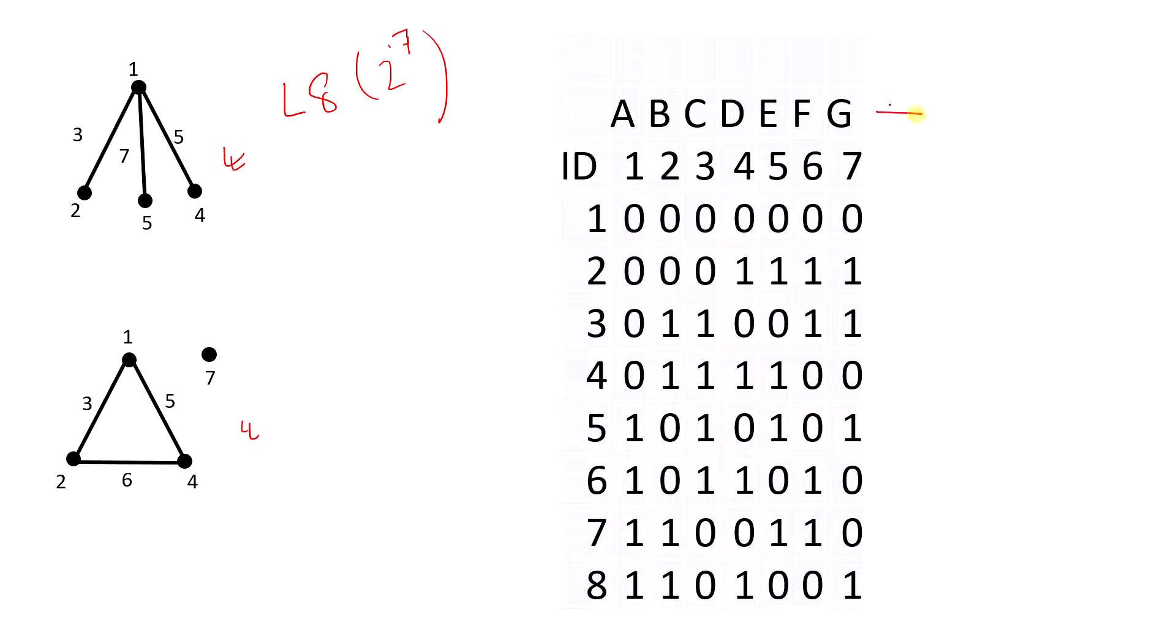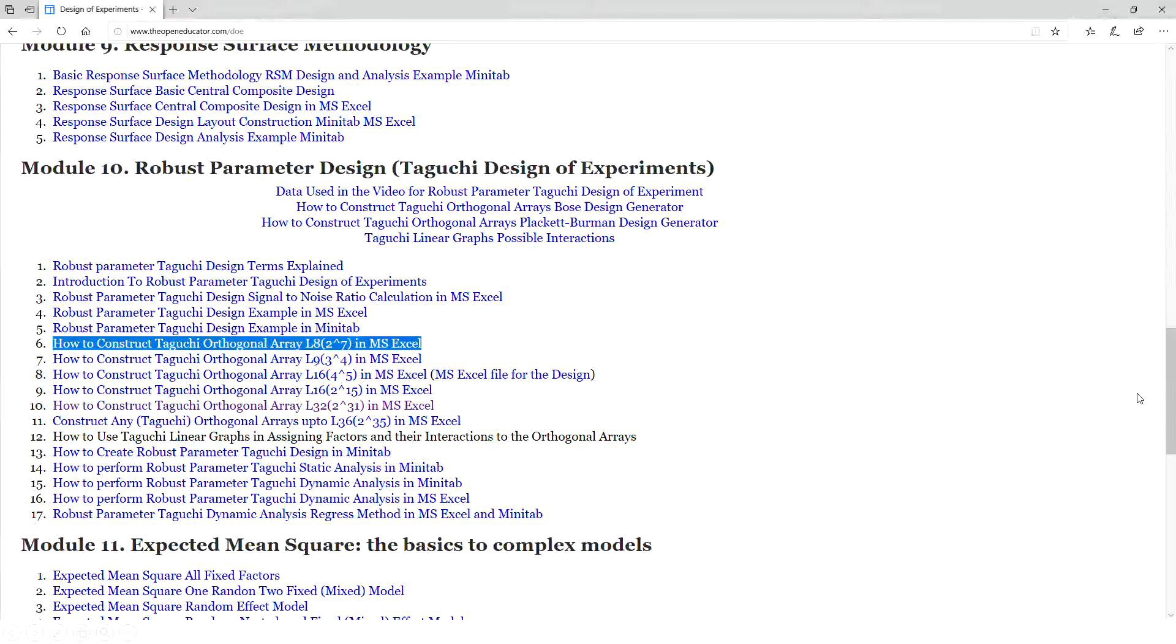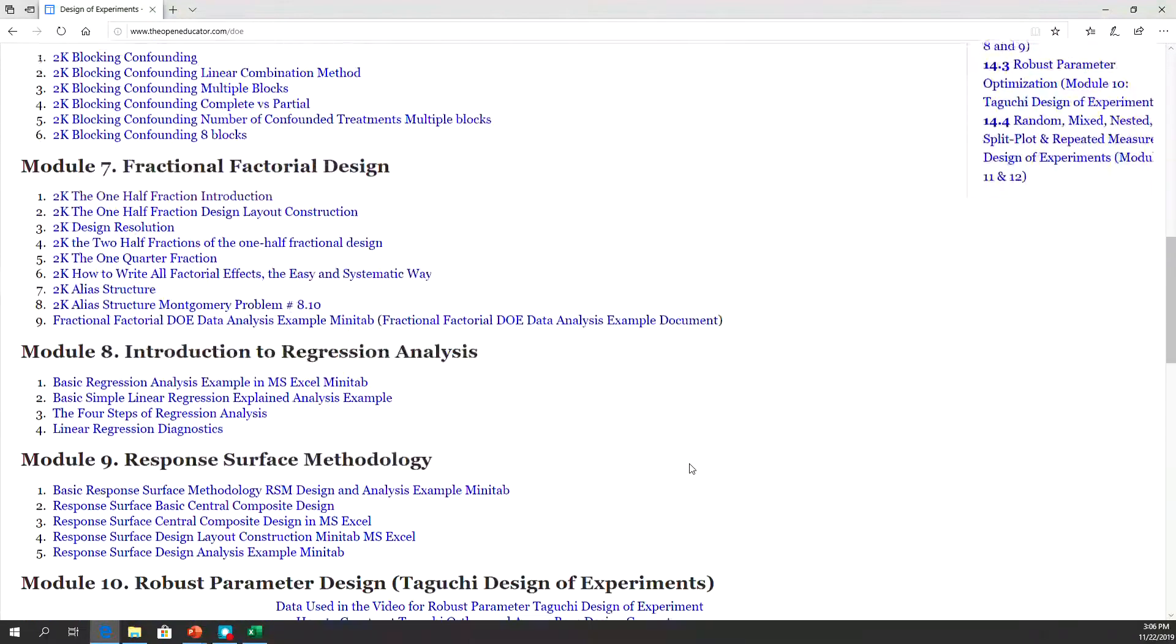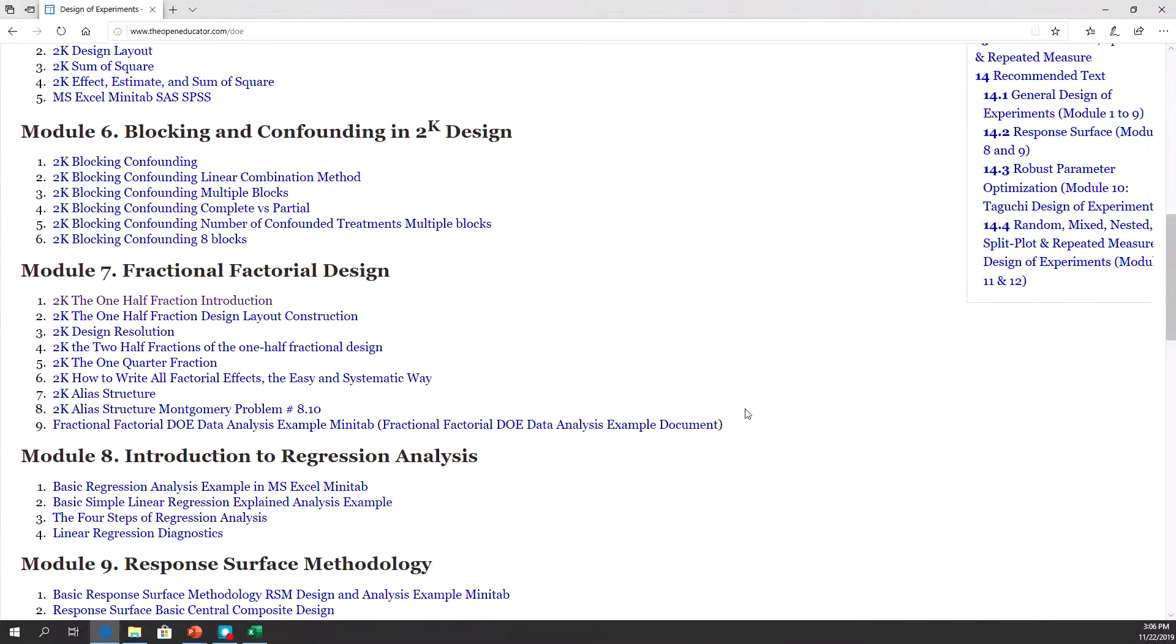Now, Taguchi at the beginning says this is a fractional factorial design, and he wants to save money and time. In the traditional design of experiments, the interactions between factors are considered afterwards. Once a factor is significant, then we think about the interactions.